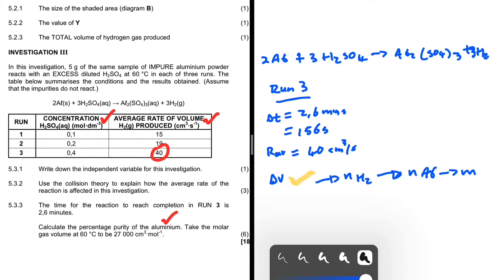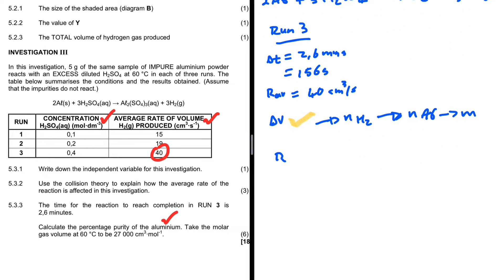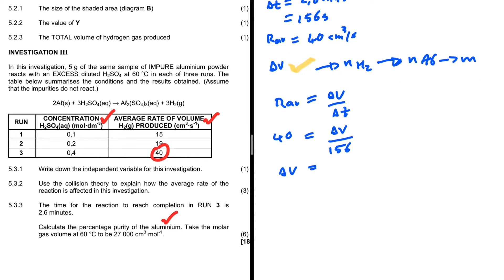Let's execute the plan. Average rate = change in volume / change in time. So: 40 = ΔV / 156. The change in volume is what we want, and the change in time is 156 seconds.